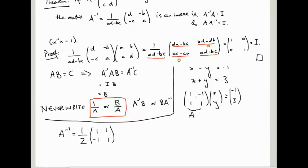So if we now want to divide by this A, we're multiplying by A inverse on the left to cancel it off, and what we get is X, Y equals A inverse times minus 1, 3, which is a half, 1, 1, minus 1, 1, times minus 1, 3.